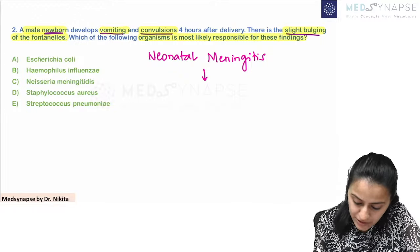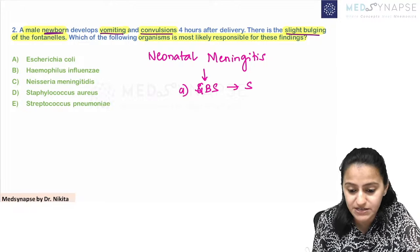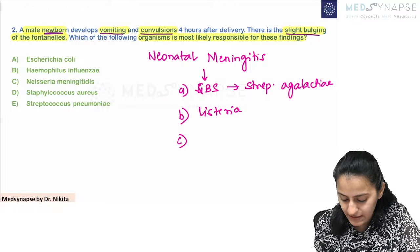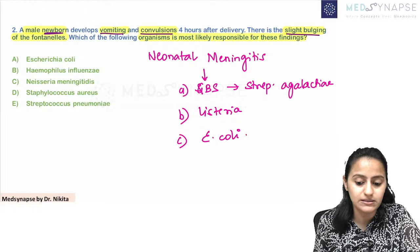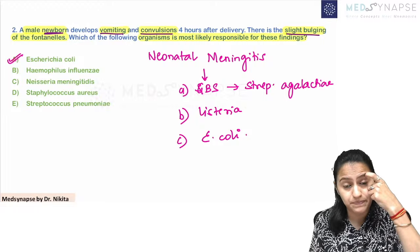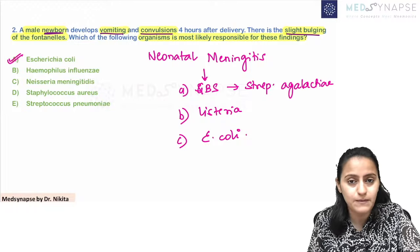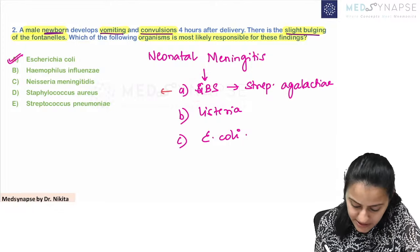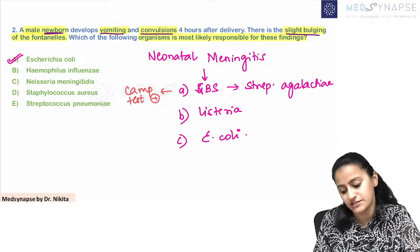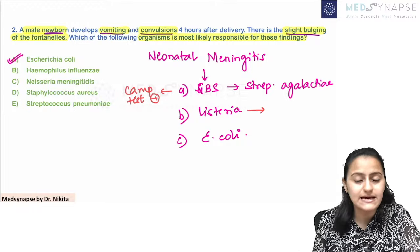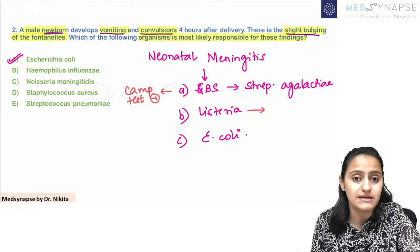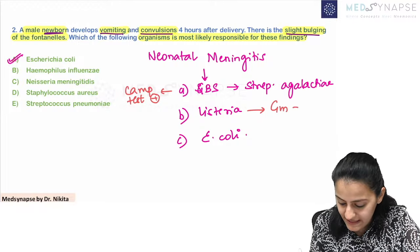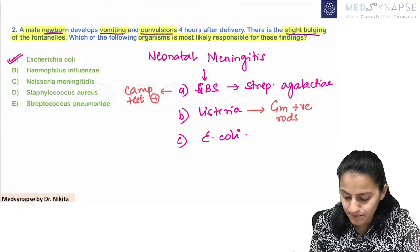Group B Streptococcus and Streptococcus pyogenes come under beta-hemolytic. For neonatal meningitis, the important organisms are: Group B Streptococcus (Streptococcus agalactiae), Listeria, and E. coli. So the correct answer here will be E. coli. Group B Streptococcus gives a positive CAMP test — that's what we need to remember.